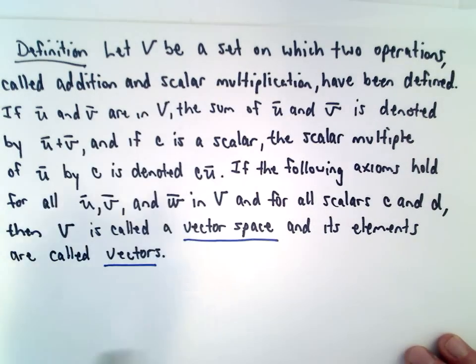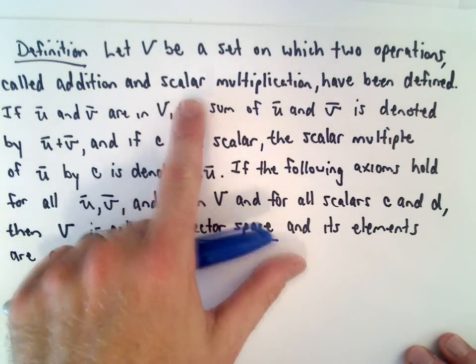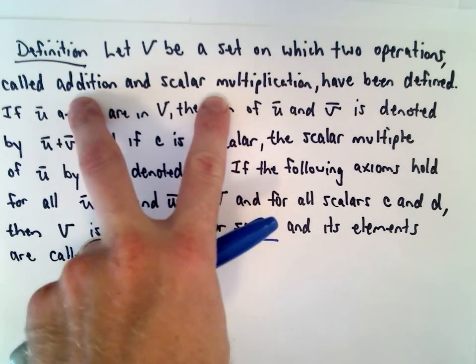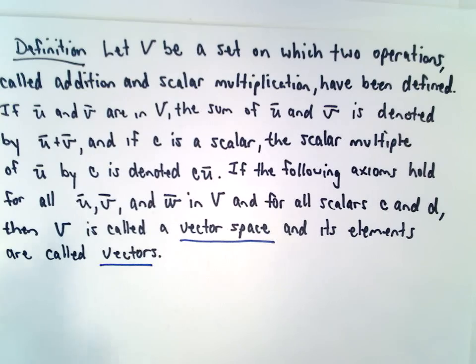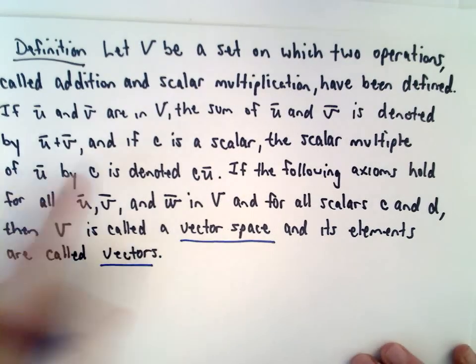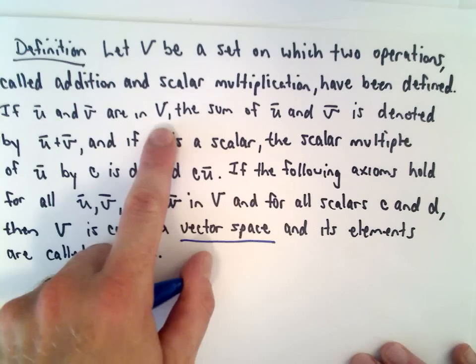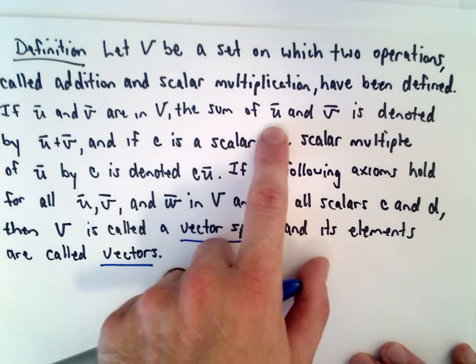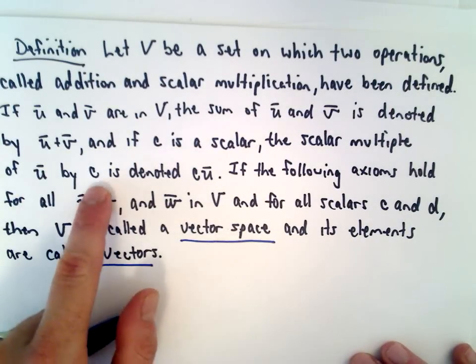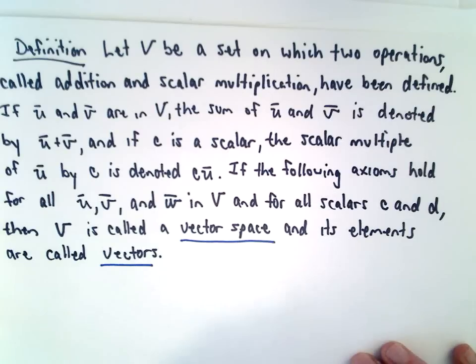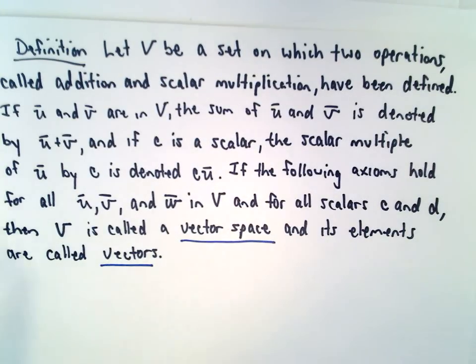Let capital V be a set on which two operations called addition and scalar multiplication have been defined. These need not be the same familiar addition and multiplication that we're used to, so that's worth pointing out. You'll see that in one of my examples. If U and V are in capital V, the sum of the vectors U and V is denoted by U plus V. And if C is a scalar, the scalar multiple of U by C is denoted as C times U. And if the following axioms hold for all U, V, and W in the big set V and for all scalars C and D, then capital V is what's known as a vector space, and its elements are called vectors.